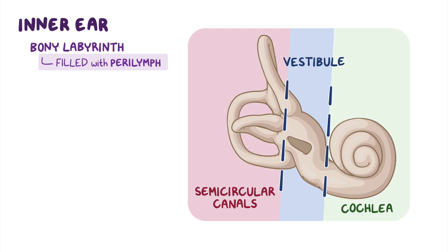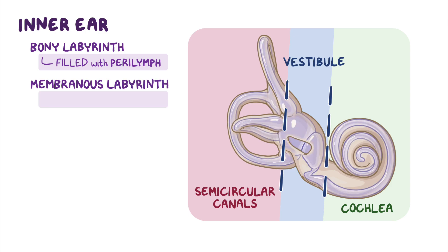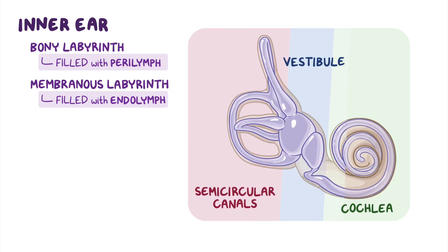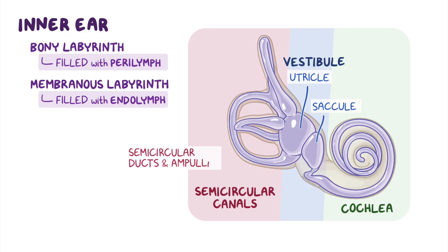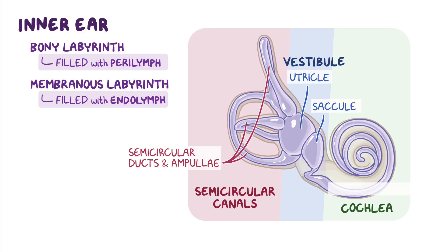Suspended within the bony labyrinth, there is the membranous labyrinth, which is basically a series of sacs and ducts filled with endolymph. The membranous labyrinth is organized into the utricle and saccule within the vestibule, the three semicircular ducts and their membranous ampullae, and the cochlear duct within the cochlea.